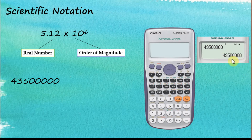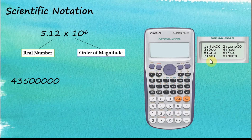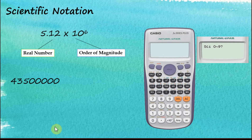If we would like our answer to be displayed in scientific notation, then we go to the setup — Shift, Setup. Scientific notation is option seven, so press seven. After we tap on seven, the calculator will ask how many significant figures we would like the answer to be displayed in. In this case, let's choose three significant figures.